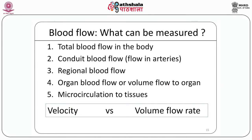There are several parameters which can be determined while measuring blood flow. If we consider the whole body as one organ, then the volume flow to the whole body can be measured — this is called cardiac output. You can measure blood flow in a given conduit artery in terms of velocity or volume flow rate. Blood flow to a given region, a single organ, or even a small area of tissue can also be determined, indicating local functioning — this is called microcirculation.